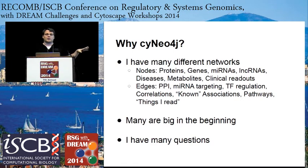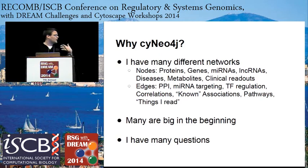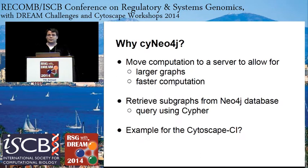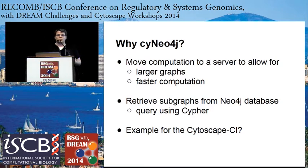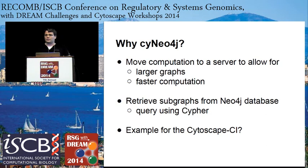Most of these networks are pretty big in the beginning and then often get cut down in size through further algorithms or manual selections. The BioNetDB is such a network and houses about 1.2 million edges. But still, I want to ask these networks questions, and that's where Cypher comes into place — to formulate a question that then gets efficiently executed on these large graphs. From a more technical standpoint, what this app does is move computation from the desktop client seamlessly to a server, using its performance for larger graphs, and then retrieve subgraphs from Neo4j to visualize and further work with in Cytoscape.